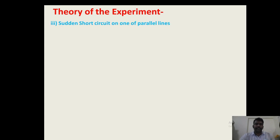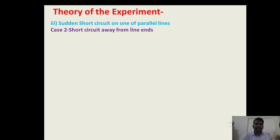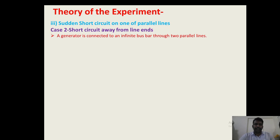We will study the application of equal area criteria — that is, sudden short circuit on one of the parallel lines — in which we will study case number 2, where the short circuit occurs at the midpoint of one of the transmission lines. For that, we will assume one generator which is connected to an infinite bus bar through two transmission lines.